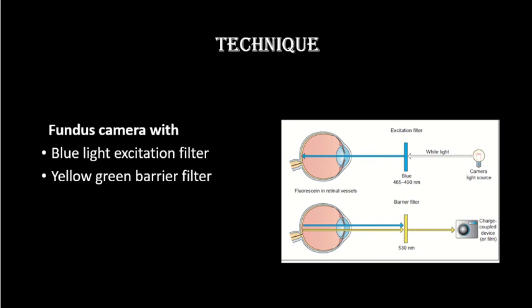For the technique of fundus fluorescent angiography, we use a camera with a white light source. This is split by an excitation filter which allows only blue light of 490 nm to go into the eye. When the light comes back, a barrier filter blocks the blue light and allows only light of longer wavelength — yellow light of about 530 nm — to reach the camera to make the image. So there are two built-in filters in this fundus camera.